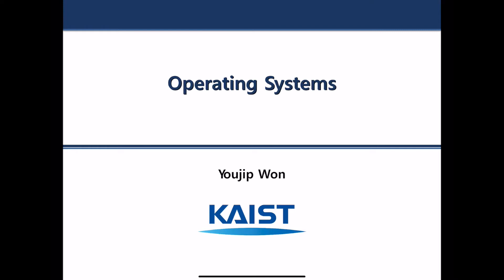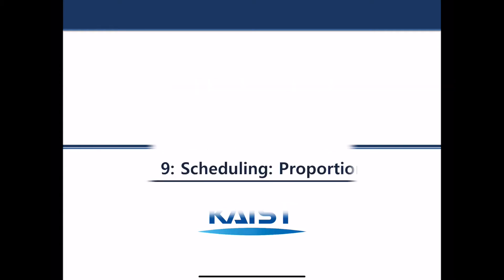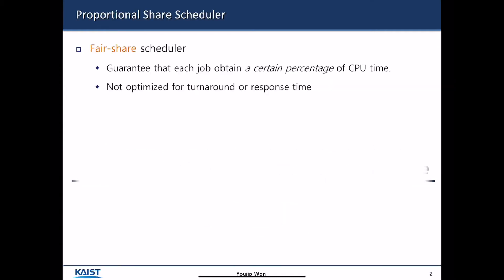In today's class, we are going to explain the more advanced CPU scheduling schemes. It is called Proportional Share. That's chapter 9 of the OSTEP book.